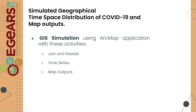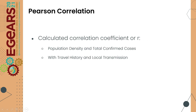GIS emulation using the ArcMap application involved three activities: first, join and relate; second, time series; and third, map outputs. After sorting the data, the researchers conducted Pearson correlation between population density and total confirmed cases, and Pearson correlation between cases with travel history and local transmission cases.